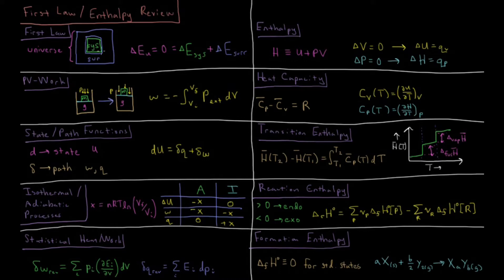The universe is defined as some system which is our system of interest and everything else in the universe is the surroundings. The energy change of the system plus the energy change of the surroundings must equal zero because that is the energy change of the universe which must be constant.